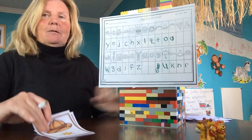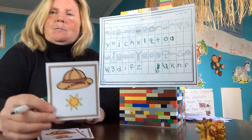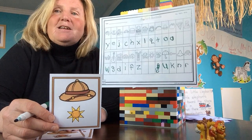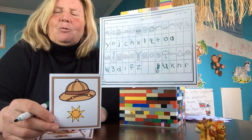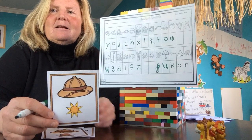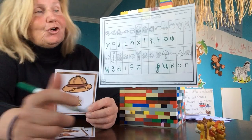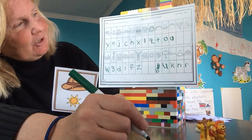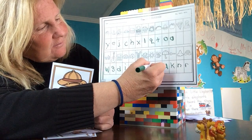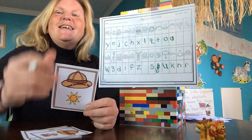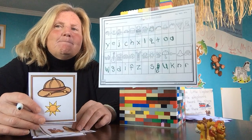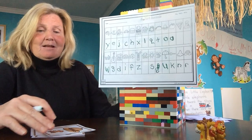What do we got — sun! Noel, what does the sun start with? S-S. Good — our S. Sun. What does it end with? Good job — an N.